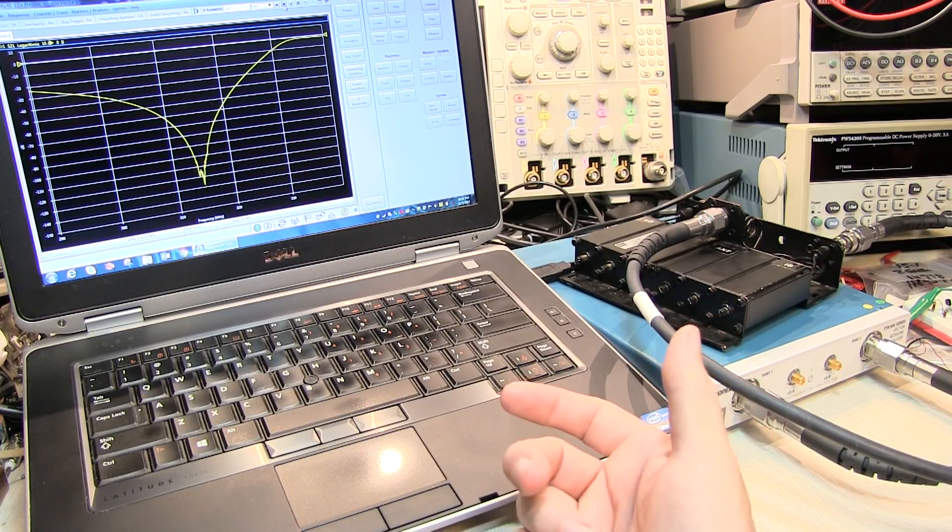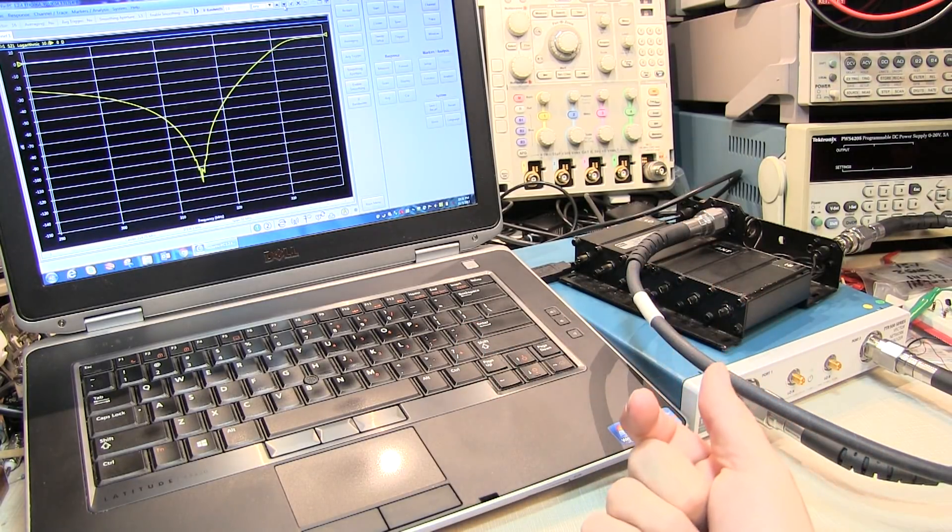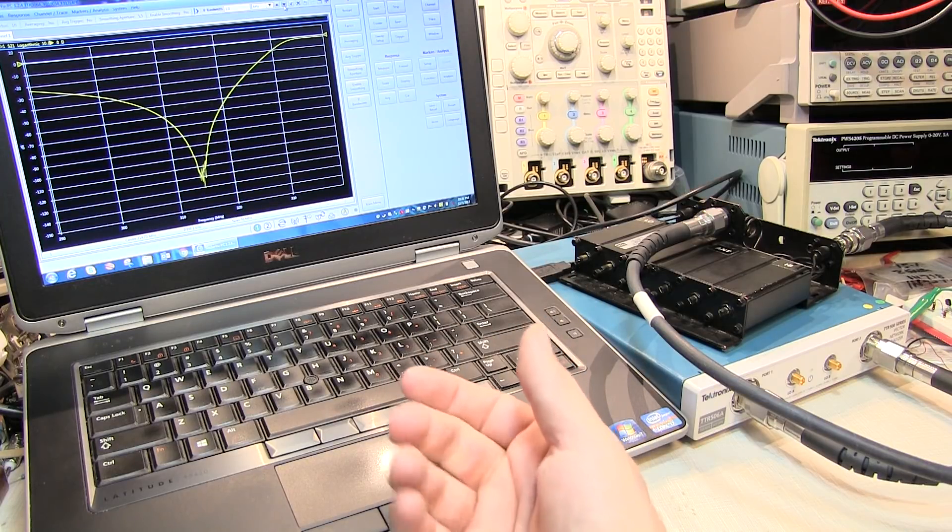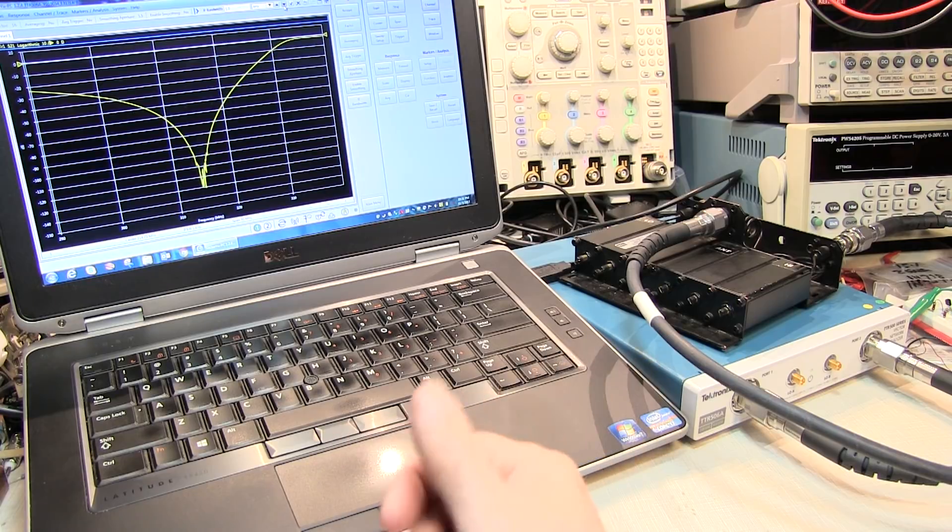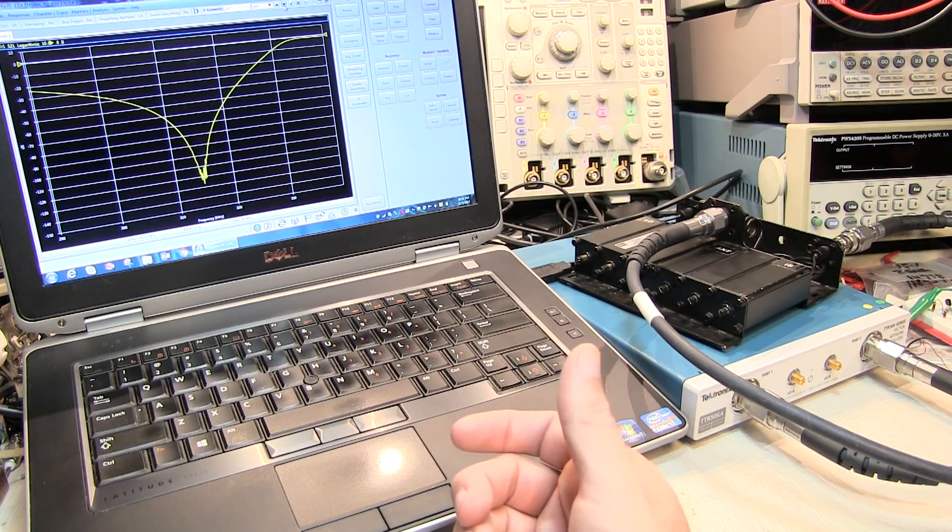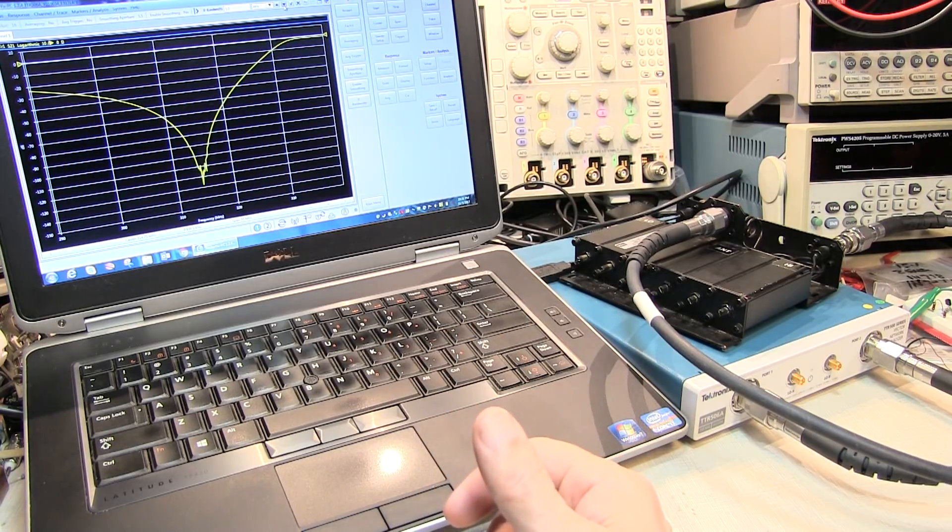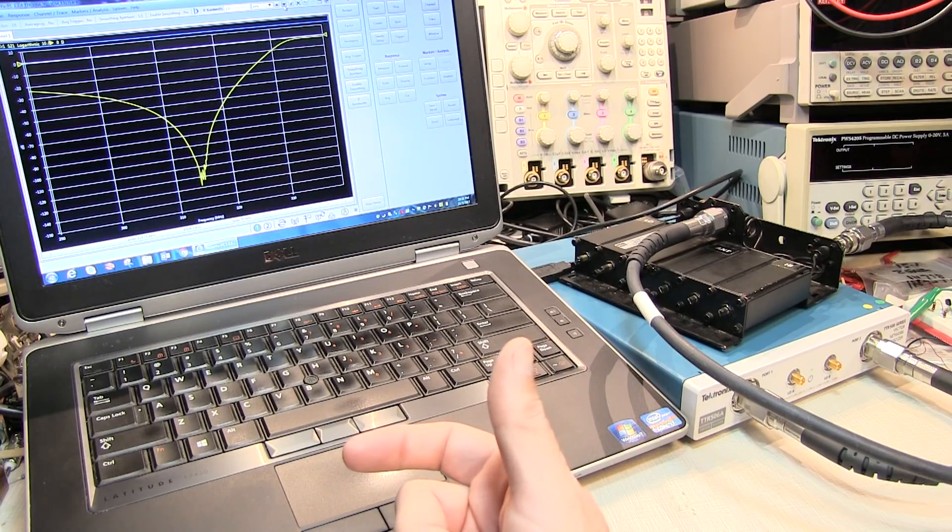A lot of these other more complex duplexers will include adjustments not only for the band pass characteristic but for the notch characteristic, and even for the insertion loss, which will also adjust the Q of the band pass side or something like that. By being able to look at both reflection and transmission properties at the same time with a VNA can be a lot more insightful and make it easier to tune these more complex duplexer types.